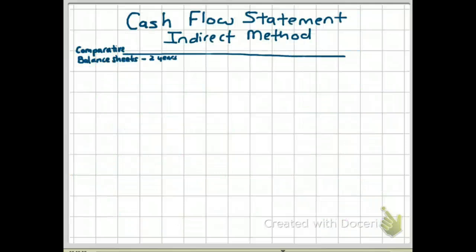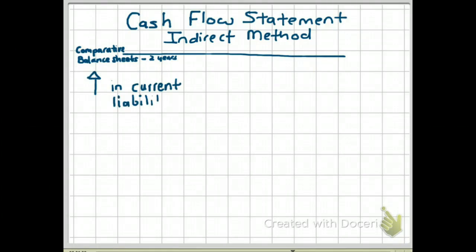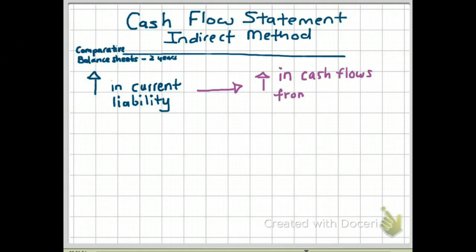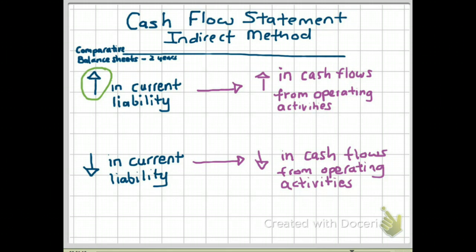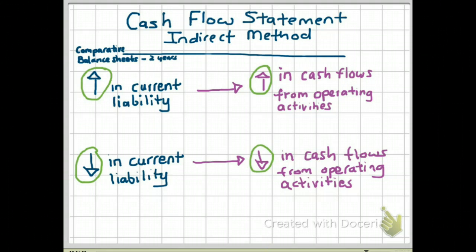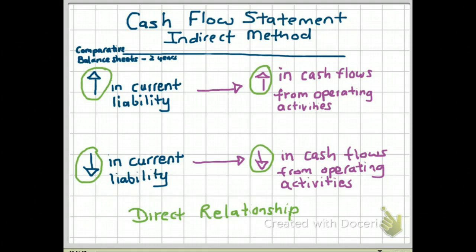For current liabilities, you are also looking at comparative balance sheets across two years. If a current liability increased from one year to the next, your operating activity cash flows also increase. If current liabilities decreased, your operating activity cash flows also decrease. Current liabilities have a direct relationship with cash flows from operating activities — they move in the same direction.